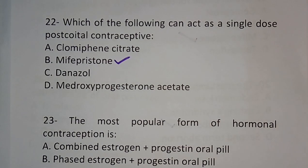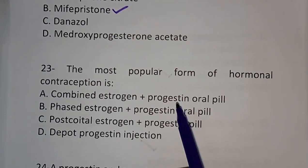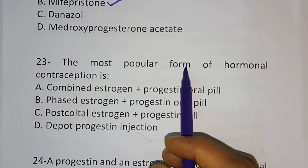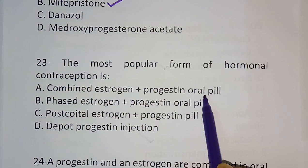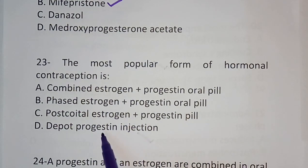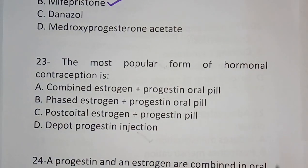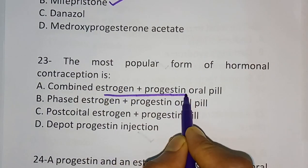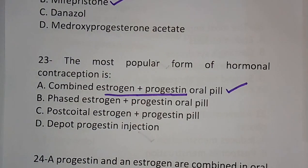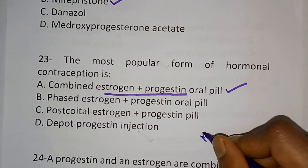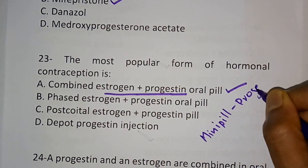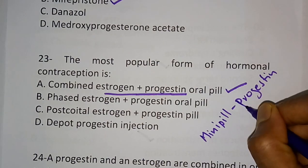Question number 23: The most popular form of hormonal contraception. Options: combined estrogen and progestin oral pill, phased estrogen and progestin oral pill, post-coital estrogen and progestin pill, depot progestin injection. The correct answer is the combined pill — the combination of estrogen as well as progestin, option A. There is also the mini pill, which contains only progestin, also known as the progestin-only pill.